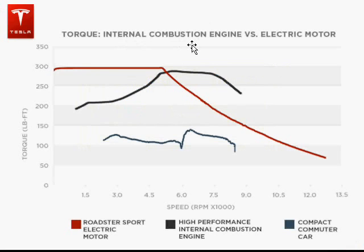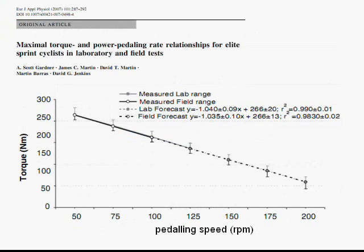We've seen already that different kinds of power plants have very different speed torque characteristics. These are some examples. This is another example, this is data for human power plants, competitive cyclists.